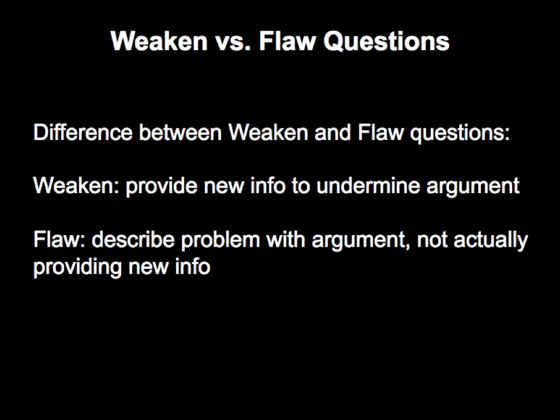Flaw questions, on the other hand, ask you to identify a problem that already exists with the argument rather than providing new information to harm it. Weakening questions open the door to new information — that's why you have the phrase 'if true' in the question stem — while flaw questions don't require any new information at all. That's why you can often predict the correct answer, because it relates to something already contained within the argument itself.